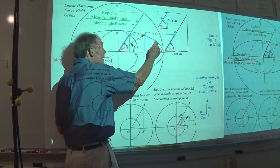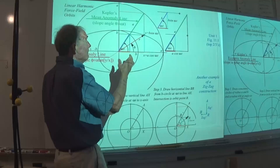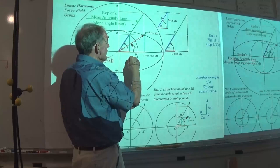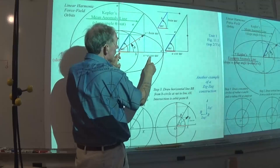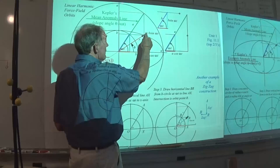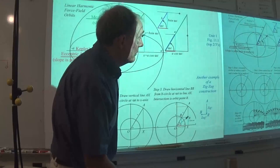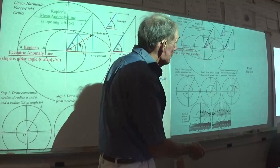We're finding, for a particular time, where a particle would have been starting at time equals zero on this orbit, falling along that curve. The y coordinate is just B sine of that angle, and the x part is A cosine of the same angle. So x equals A cosine, y equals B sine — that's all there is to this construction. Let's look at a picture showing a number of solutions in sequence.